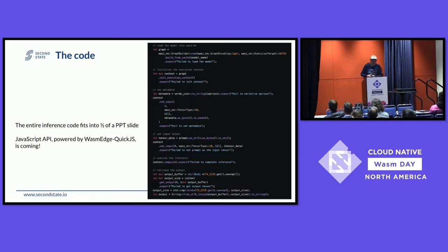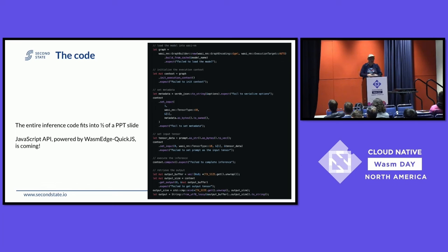Also note that on line two, 'execution target auto' means it automatically searches for whatever accelerator is available on the device. If I run the same application on an NVIDIA GPU device, it will go a lot faster. On an older Mac without a GPU, it will go a lot slower — about an order of magnitude difference across scenarios. The point is it's the ultimate portability solution: a single Wasm file compiled from a single source, and you copy it to different devices and it automatically figures out whether the device has a GPU, Apple Silicon, or any other accelerator.